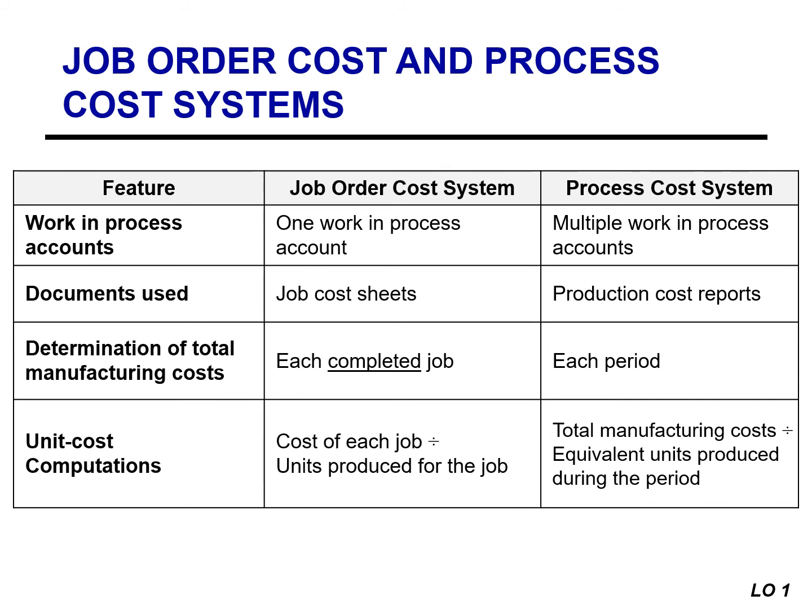The first difference is the work in process accounts. A job order cost system uses only one work in process account, whereas a process cost system uses multiple work in process accounts — one for each department. The second difference is the documents used to track cost. A job order cost system charges cost to individual jobs and summarizes them in a job cost sheet, while a process cost system summarizes cost in a production cost report prepared for each department.